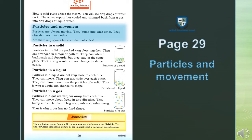Page 29: Molecules and movement. Molecules aur unki harkat. Molecules are always moving — molecules hamesha harkat karte rehtay hain. They bump into each other — ek dusre se takratay rehtay hain. They also slide over each other — yeh ek dusre ke upar se aur paas se bhi phisal kar guzar jaatay hain. Are there any spaces between the molecules? Kya in molecules ke darmiyan khaali jagahen hoti hain?